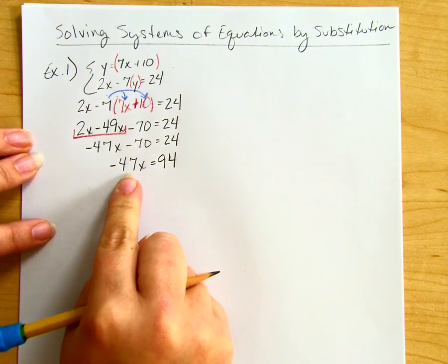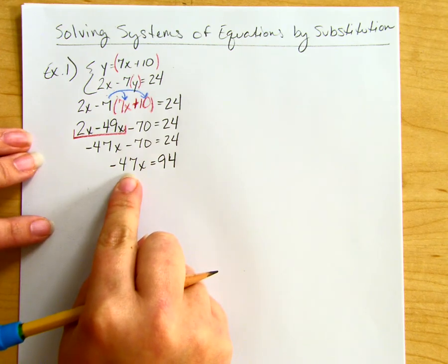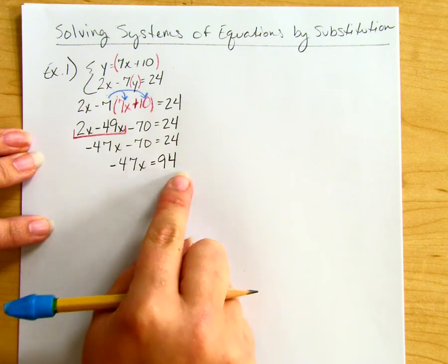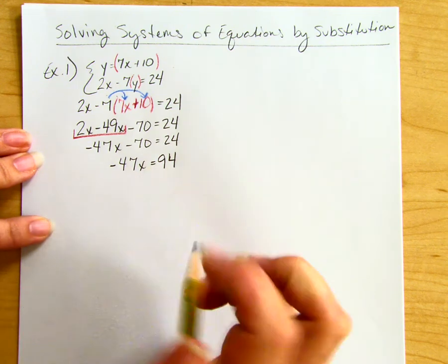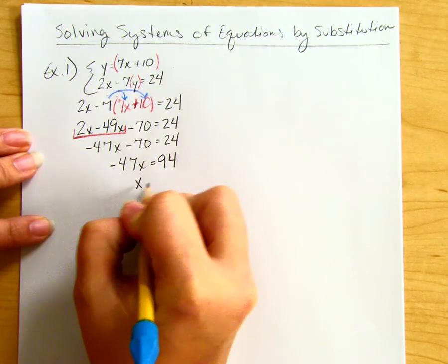To get rid of the -47 in front of x, I'll divide both sides by -47. When I divide on the left by -47, I'm left with x.